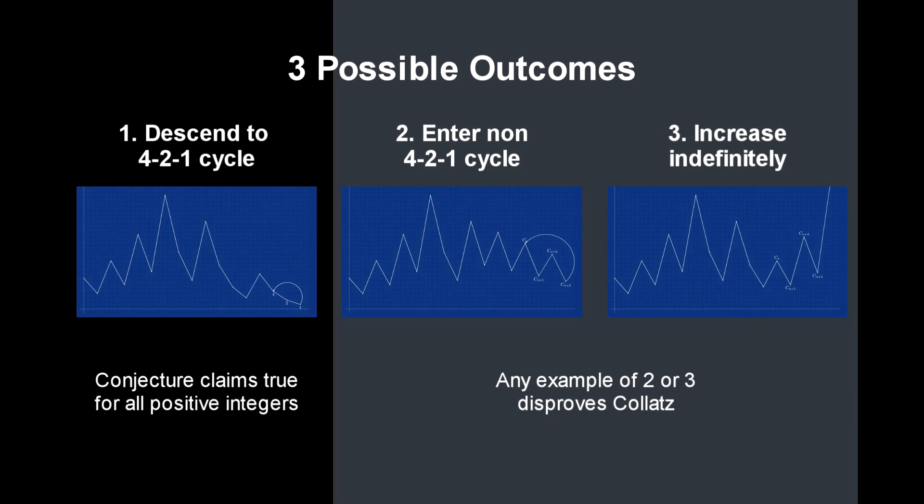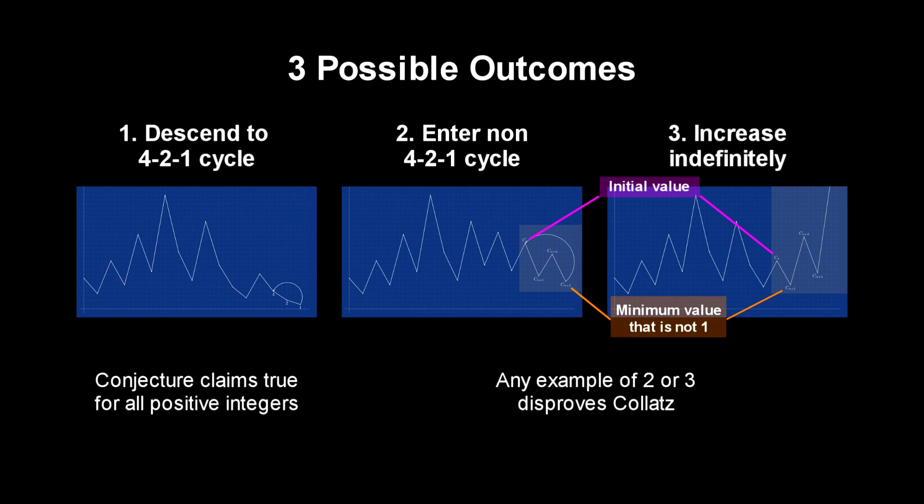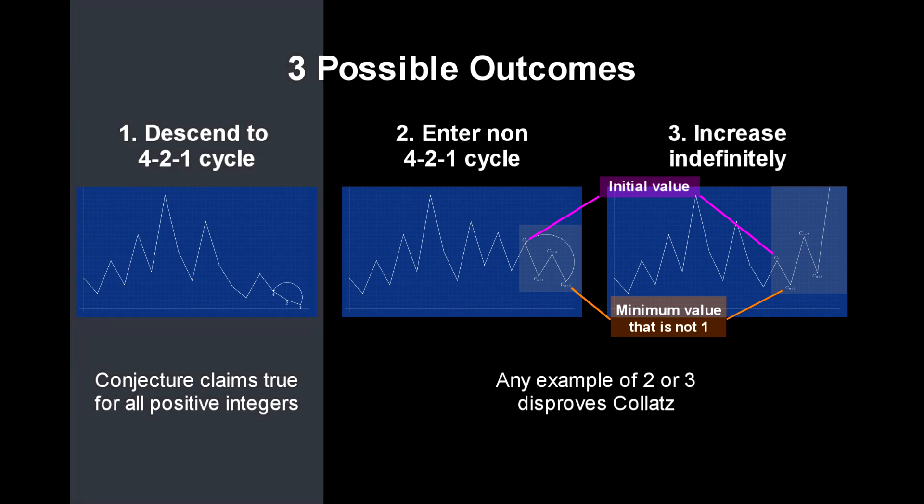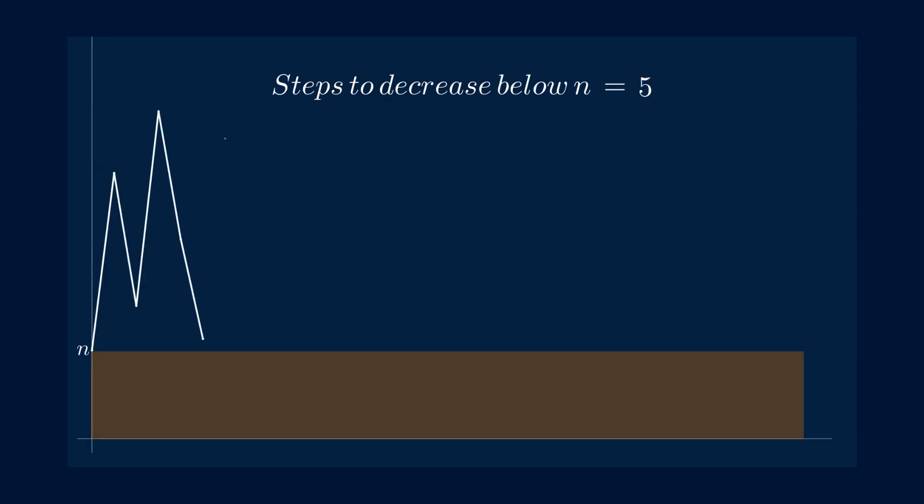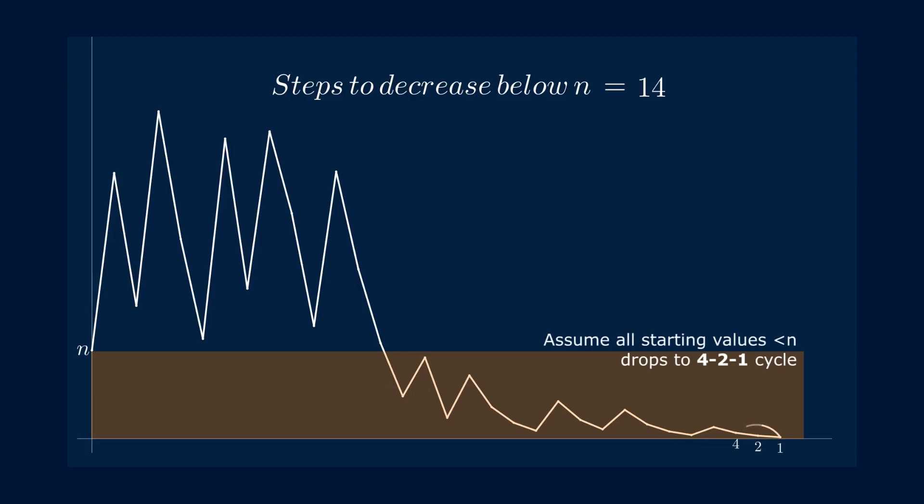One observation is that a counterexample sequence will contain a minimum element other than 1. In other words, the conjecture claims that all Collatz sequences has a minimum value of 1. I simplified the problem by checking for any positive integer n, how many steps will it take to reach a value less than n? This simplification is assuming that all values less than n will drop down to the 4-2-1 cycle.